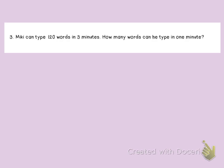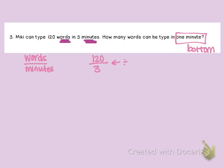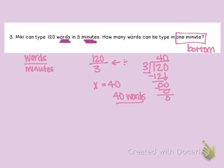For number three, try this using fraction notation. You should have set up 120 divided by 3. Words go on top and minutes go on bottom — it wants to know per minute. Take the numerator and divide by the denominator: 3 goes into 12 four times and into 0 zero times. So X equals 40, meaning he can type 40 words per one minute.